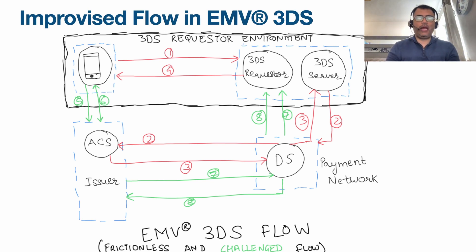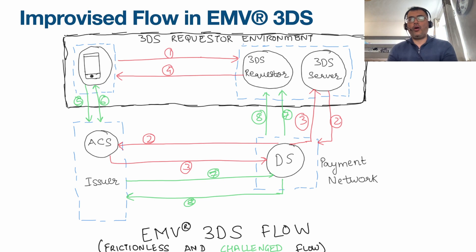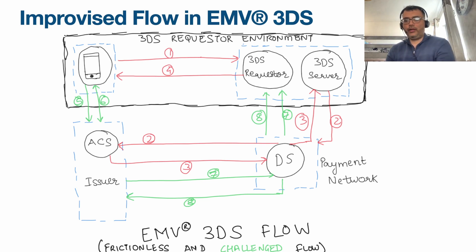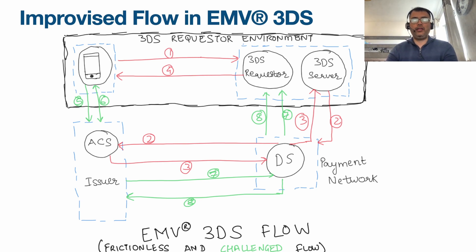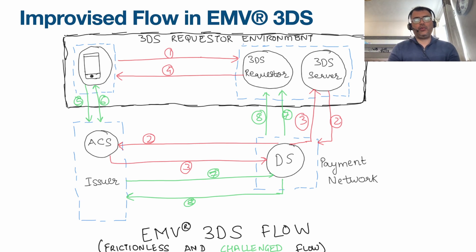In step three, the issuer decides whether to continue with the frictionless process — meaning no challenge required — or if there is high risk or further validation needed, the issuer will challenge the flow and return the result within the authentication response. In step four, the 3DS server informs the browser of the issuer's decision. If the issuer decides to frictionlessly authenticate the cardholder, the transaction is complete with nothing else to be done.